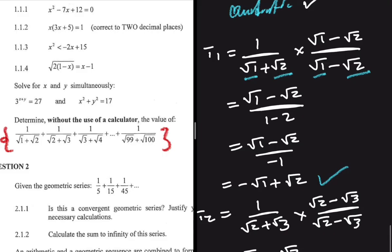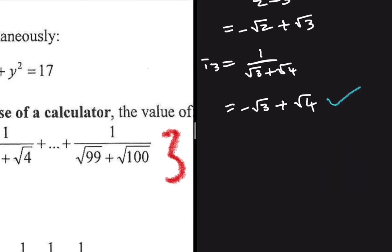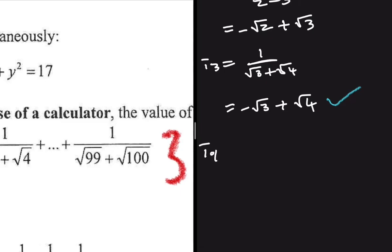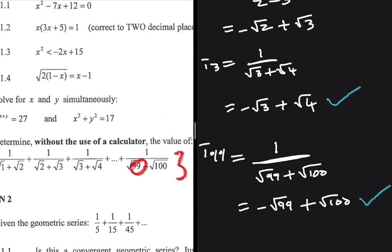Now we need the last term. Since the series goes up to 99, the last term is T99. Applying the same rationalization to T99 = 1/(√99 + √100), we get T99 = −√99 + √100. Now we have all the rationalized terms we need.